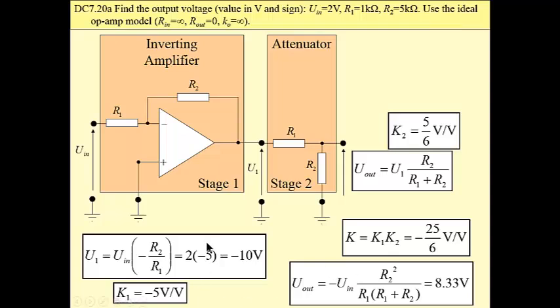The first gain of inverting amplifier is minus 5. Gain of attenuator is 5 over 6. Then total gain is minus 25 divided by 6. This voltage is minus 10. And voltage at the output of voltage divider of our system is 8.33 volt.